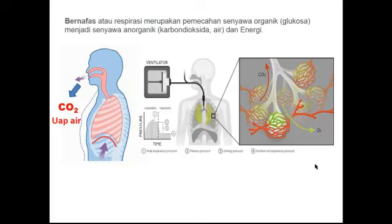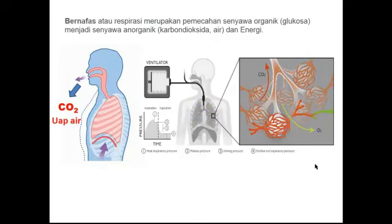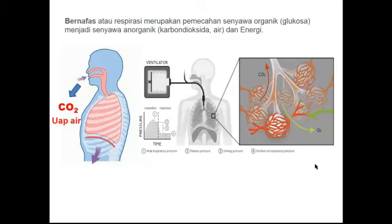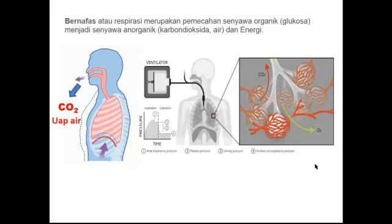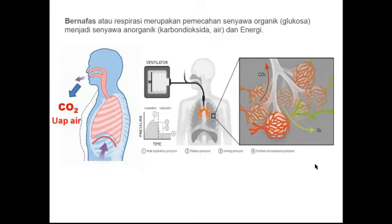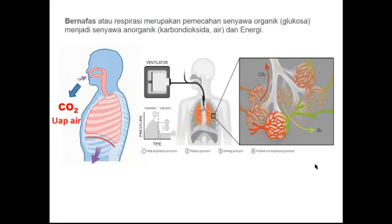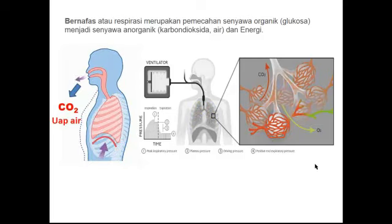Sekarang kita bahas yang CO2-nya. CO2 dari sel-sel tubuh yang tidak terpakai, itu diikat lagi oleh Hb. Jadi, di sel-sel tubuh terjadi oksidasi tadi, menghasilkan energi, sampahnya CO2. CO2 ini nanti diikat lagi oleh Hb, zat warna merah darah. Dibawa ke paru-paru melalui jantung bagian kanan.